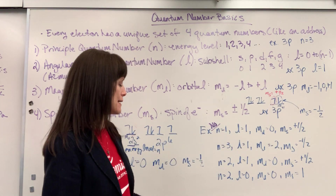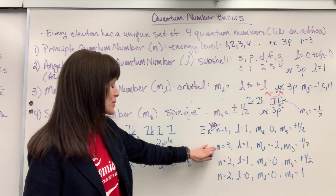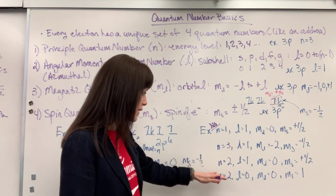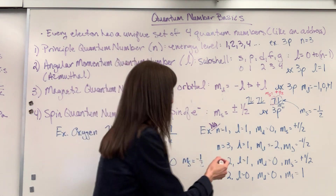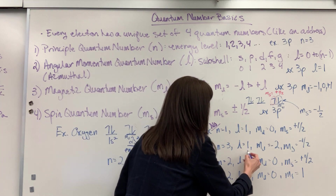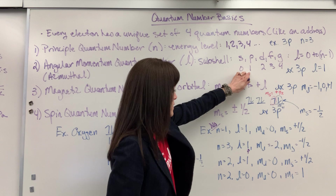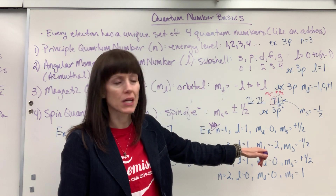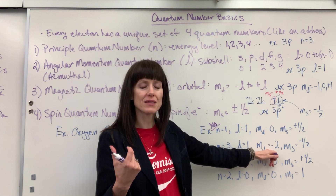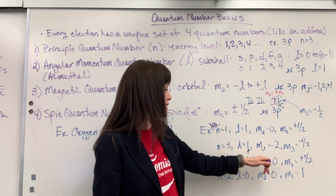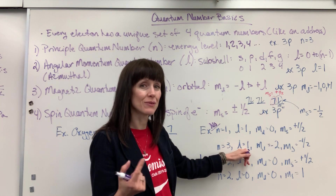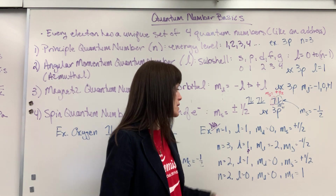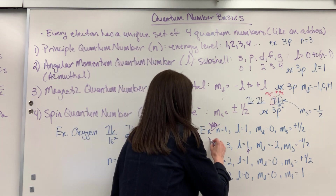Let's go to the next one. N equals three — third energy level. L equals one — that tells me I'm in the P subshell, because P is given the number one. Then M sub L minus two — that's where it doesn't work. M sub L has to be plus or minus L. If L is one, I can only have minus one, zero, or plus one. I can't have a minus two. If L were two — a D block — then M sub L could be minus two, minus one, zero, plus one, or plus two. But with L equals one, that M sub L can only be plus or minus one.